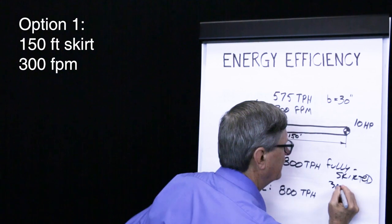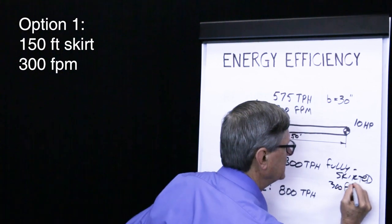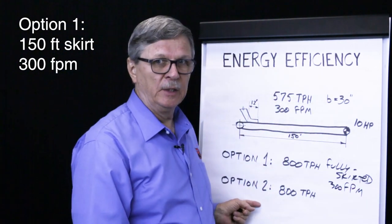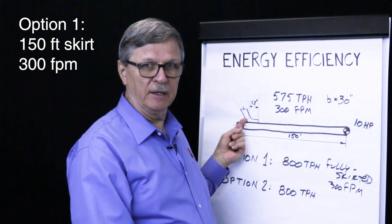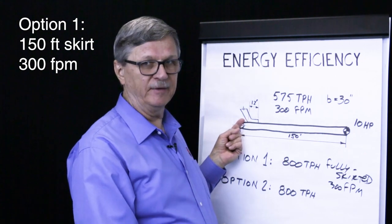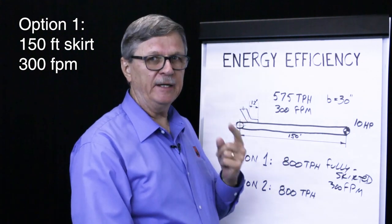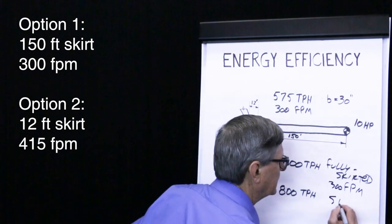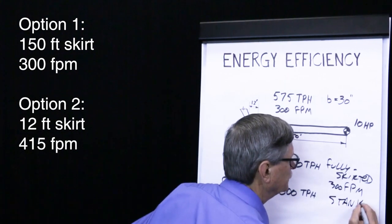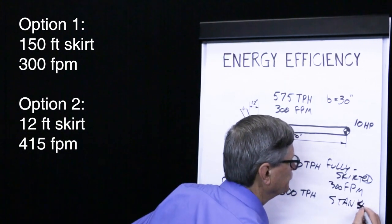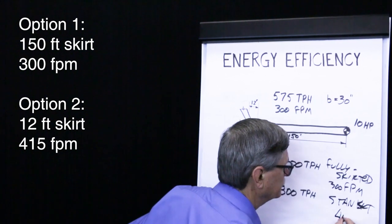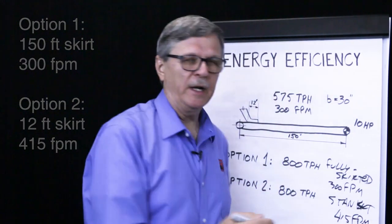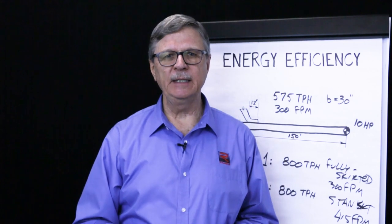Option two recommended the use of a standard skirt at 12 feet long with a 415-foot-per-minute belt speed.